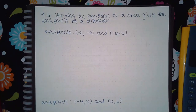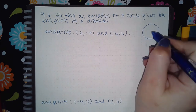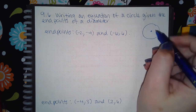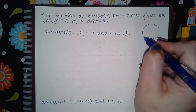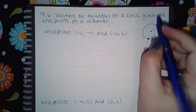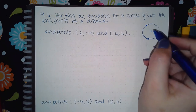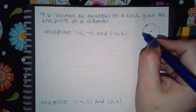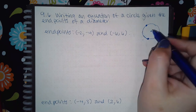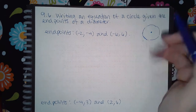Now we have: writing an equation of a circle given the endpoints of a diameter. What's happening here is that they're giving me two points — maybe like this point and this point, or negative six, six. They're going to give you two points on the diameter.